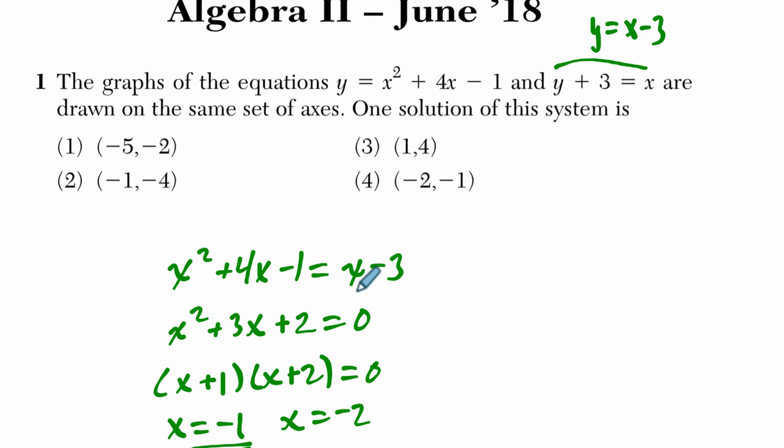If x is negative 1, the output would be, plug negative 1 here, negative 1 minus 3 is negative 4, and that's choice 2.